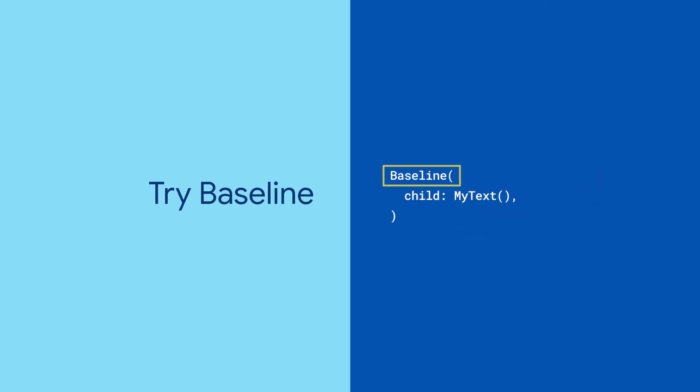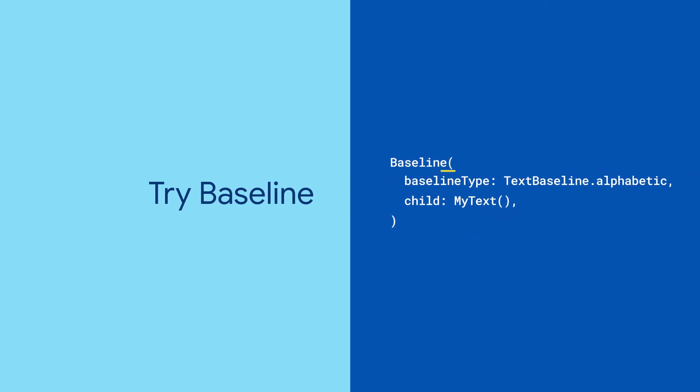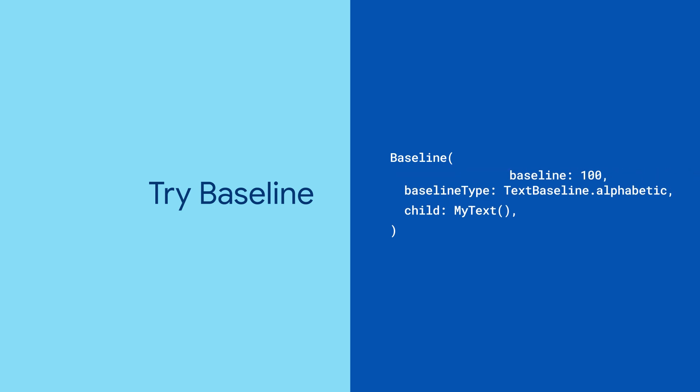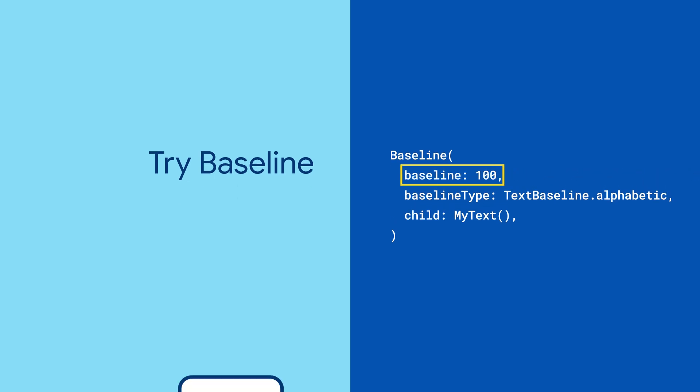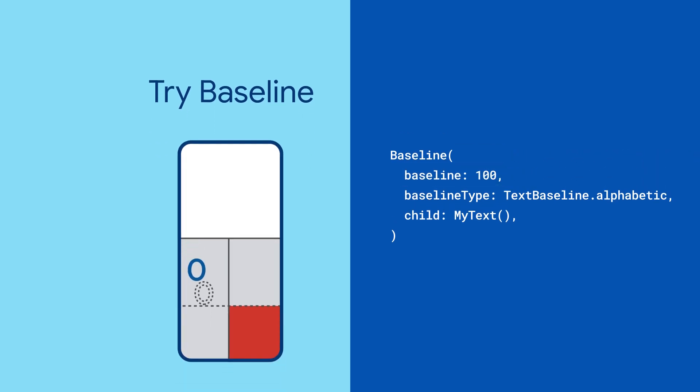But you know where to place its bottom, and that's where Baseline comes in. Wrap your widget in a Baseline, set its baseline type to alphabetic, and provide an offset to the baseline parameter. The baseline value will tell Flutter where to position the text so that its bottom will be that many pixels below the top of the parent.